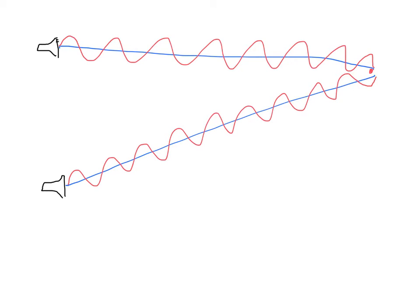Why would that be? Well, given whatever distance there is from speaker one to that point, the wave will have gone through so many oscillations — so many periods. How many periods it's gone through depends strictly on what that distance is. Let's call this distance one and this one distance two. How many oscillations have occurred depends on the distance traveled compared to the wavelength, since every complete wavelength equals one oscillation. So this ratio tells you basically how many times wave one has oscillated.